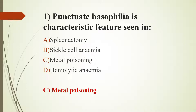Punctate basophilia is also known as basophilic stippling. It is the presence of numerous basophilic granules distributed throughout the cytoplasm of RBCs. It is fragments of ribosomal DNA. Metal poisoning is the result of exposure to heavy metals like lead, mercury, and arsenic.